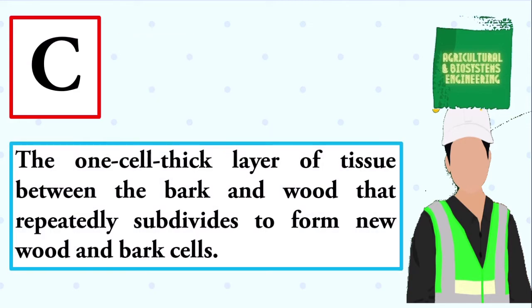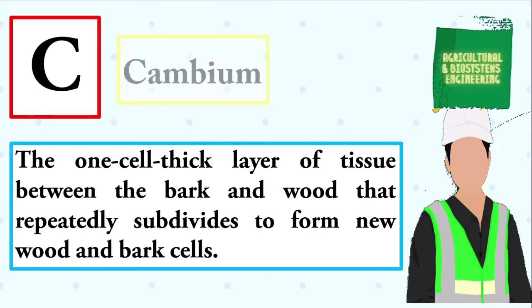The one-cell-thick layer of tissue between the bark and wood that repeatedly subdivides to form new wood and bark cells. The answer is cambium.